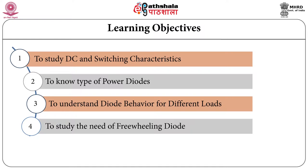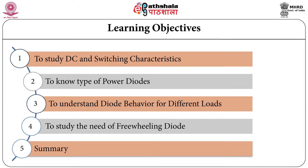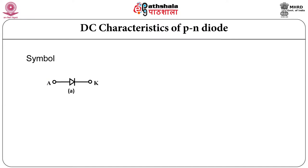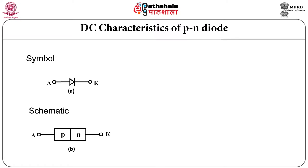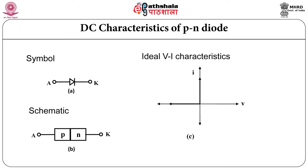After studying the freewheeling diode we will stop our discussion. The symbol of diode is as shown in figure. It has two terminals: anode and cathode. It has basic PN structure as shown in figure. The ideal diode has IV characteristics as shown in the diagram.